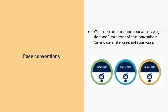A little bit about casing conventions. You might have noticed that we use upper camel case when we describe resources and that we have that baked right into the navigation of our API documentation. When it comes to naming resources in a program, there are three main types of case conventions: camel case, snake case, and spinal case. These are simply a way of naming resources to resemble natural language while avoiding spaces, apostrophes, and other exotic characters.